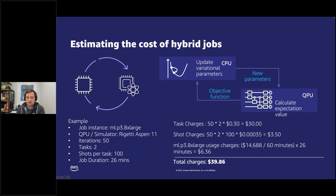The classical compute in this instance is an ml.p3.8xlarge, and that's going to cost $14.68 per hour to run. We're going to run it for 26 minutes, so the cost of the classical section is $6.36, for a total of $39.86 to run this hybrid job. That takes 26 minutes, comprised of 50 iterations, two tasks, and 100 shots per task, using the Rigetti Aspen-11 quantum computer.